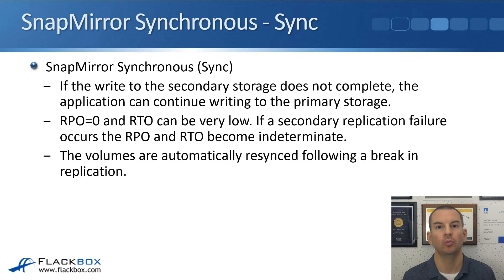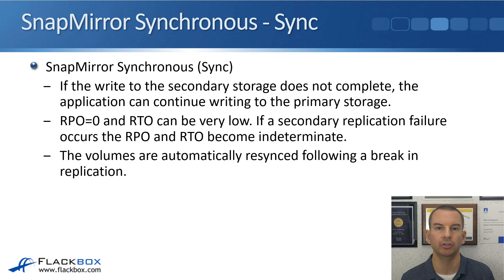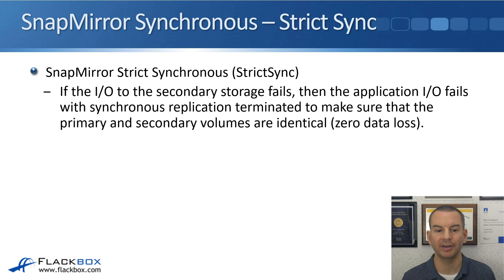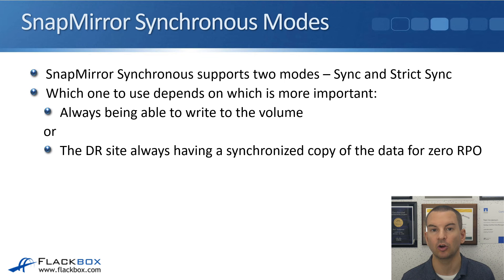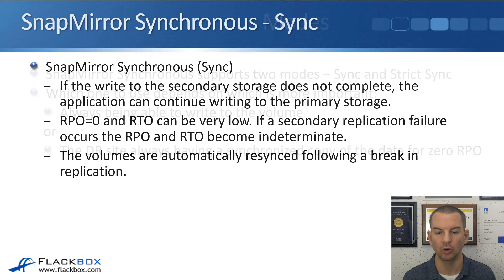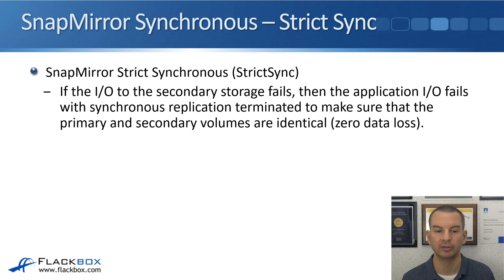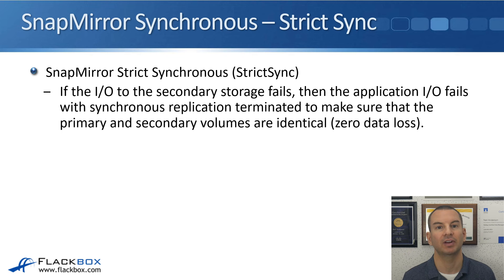If replication goes down — which should be a rare event — when it becomes available again, the volumes will be automatically re-synced without any manual intervention. With strict sync mode, if I/O to the secondary storage fails, the application I/O also fails with synchronous replication terminated, ensuring the primary and secondary volumes remain identical. This guarantees an RPO of zero, but if replication goes down you will not be able to write any new data until it is repaired.